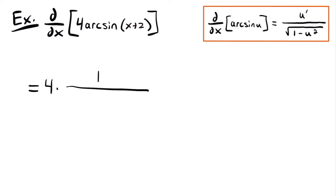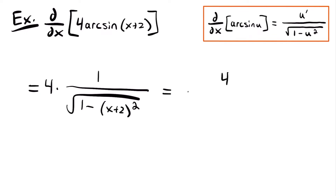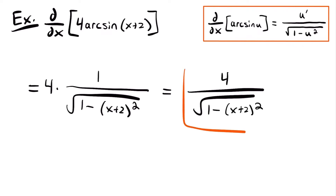That will be divided by the square root of 1 minus u squared, where u is x plus 2, so that will be the square root of 1 minus (x plus 2) squared. Simplifying, this equals 4 divided by the square root of 1 minus (x plus 2) squared, and that is the derivative of this function.